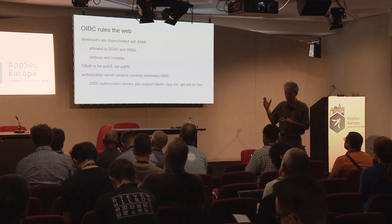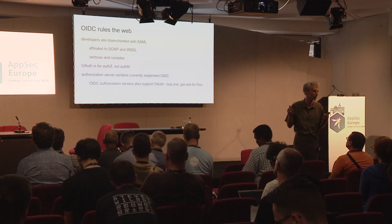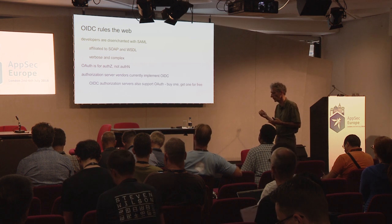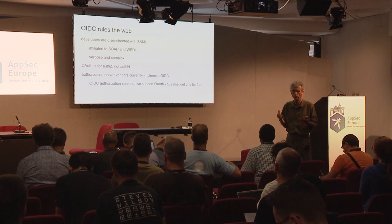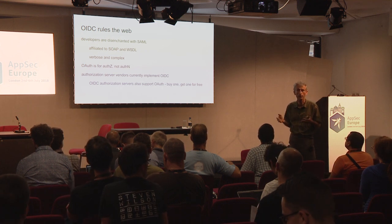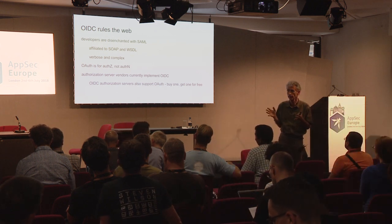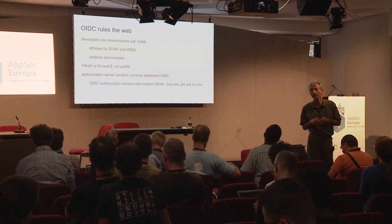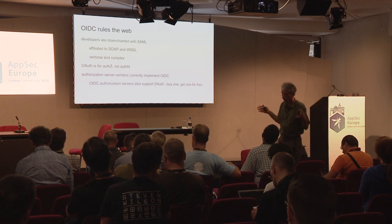I remember the days when SAML ruled the roost, and then people increasingly got frustrated with building systems using SAML for access control, because there was a growing disenchantment with XML, SOAP, and WSDL — these things were seen as very verbose and rather heavy. Then a new kid appeared on the block called OAuth, and that really took off like a rocket. It was new and shiny, and all developers wanted to play with it. It had some of the cool companies of the time behind it, such as Google, and so it got very quick adoption.